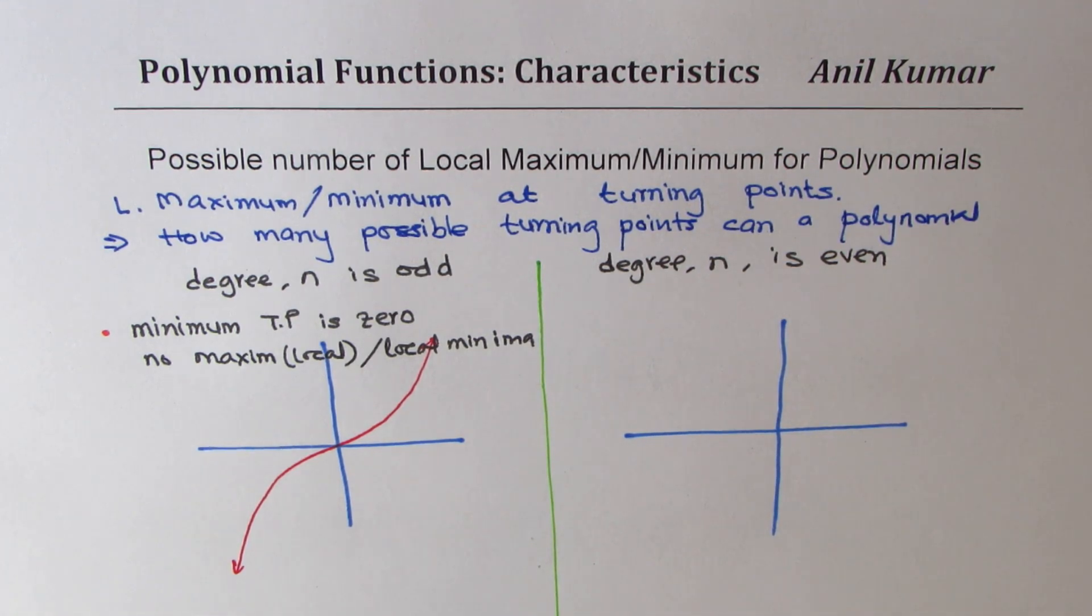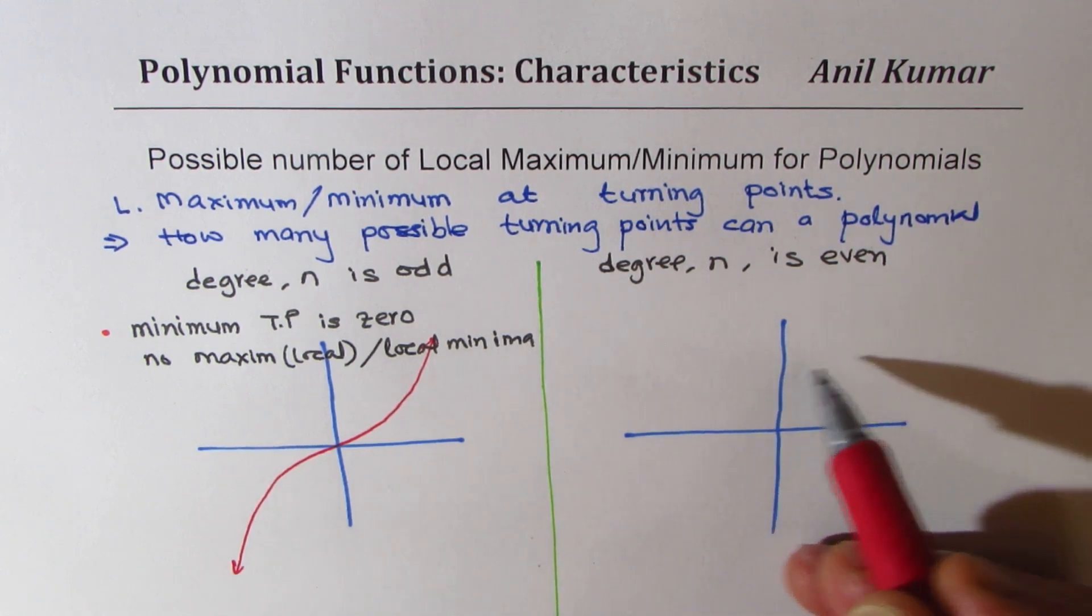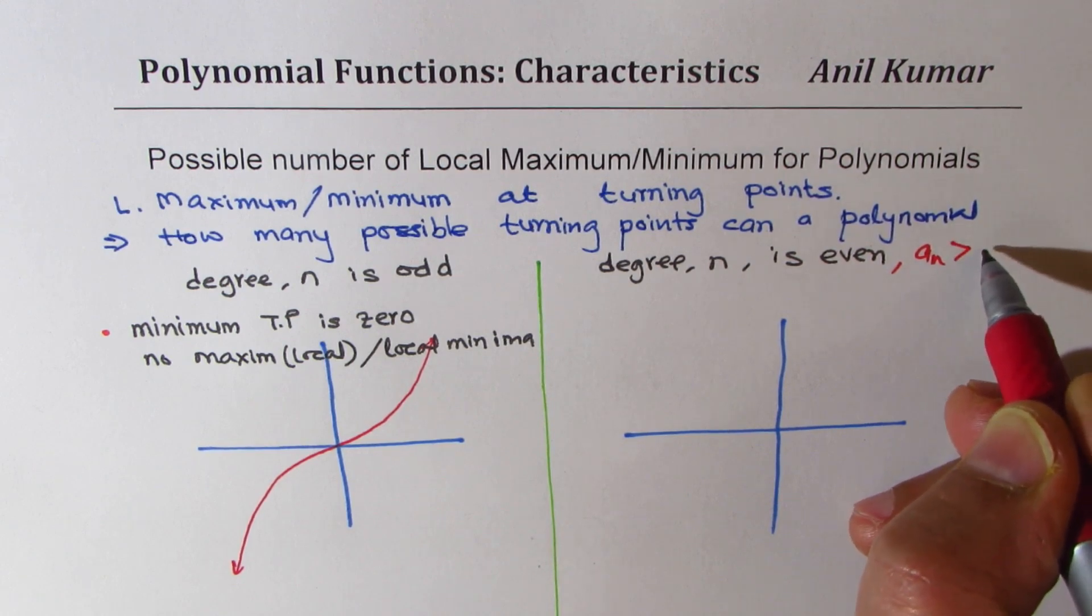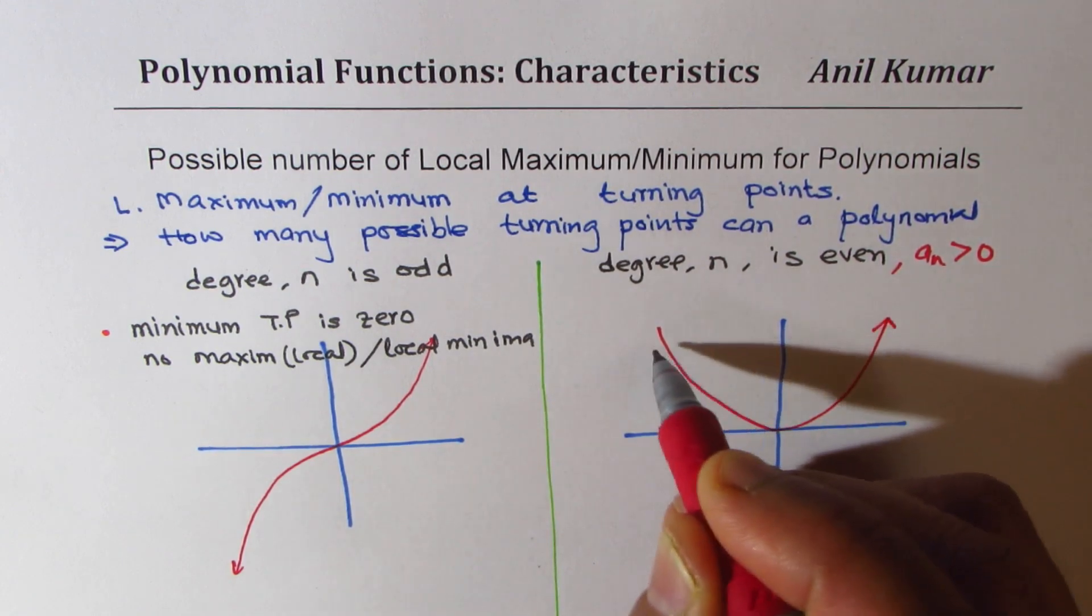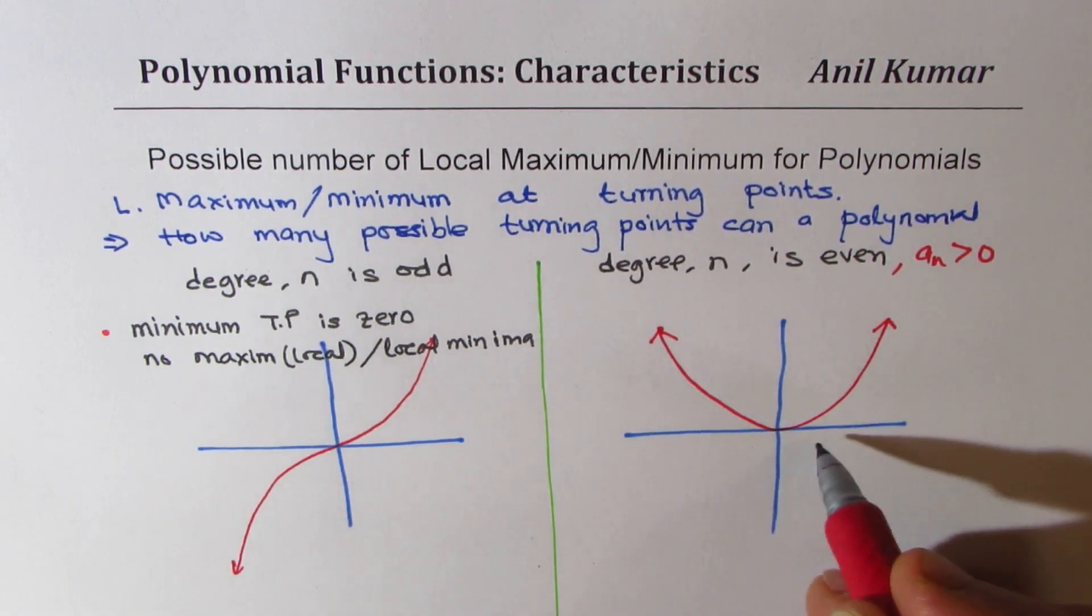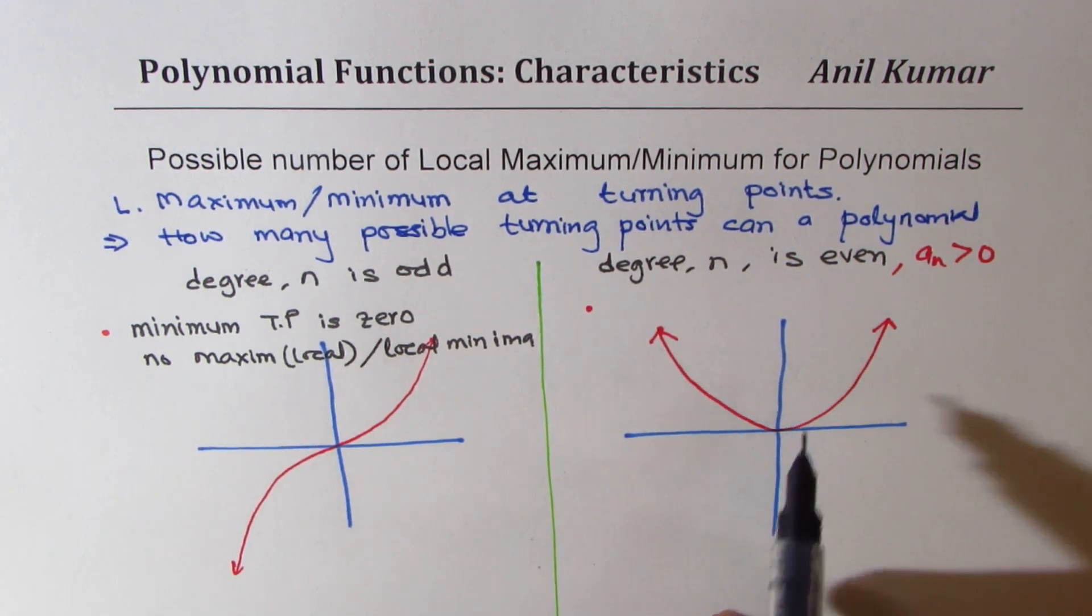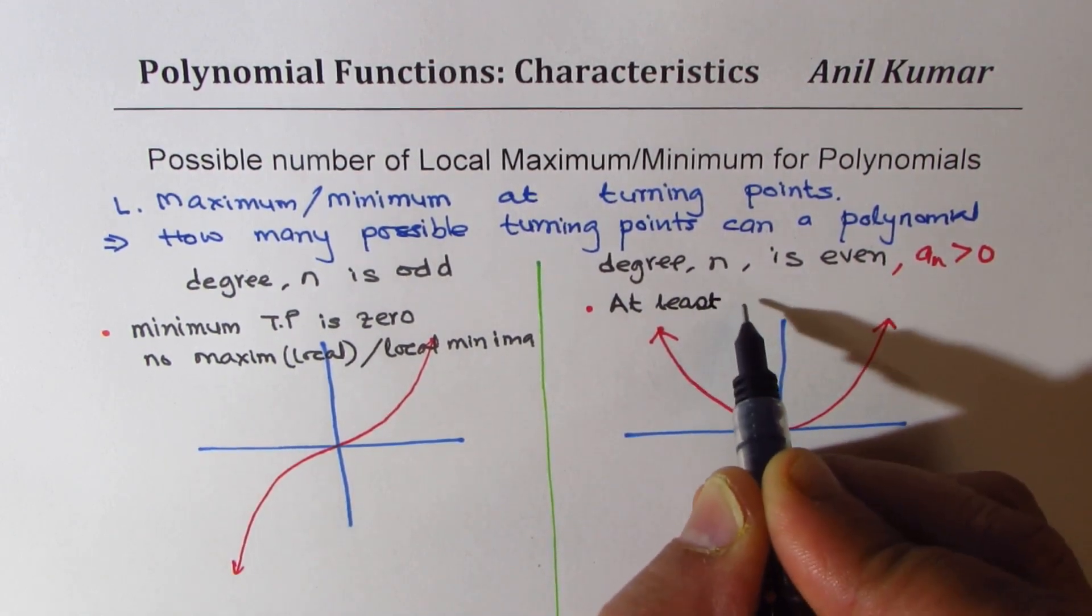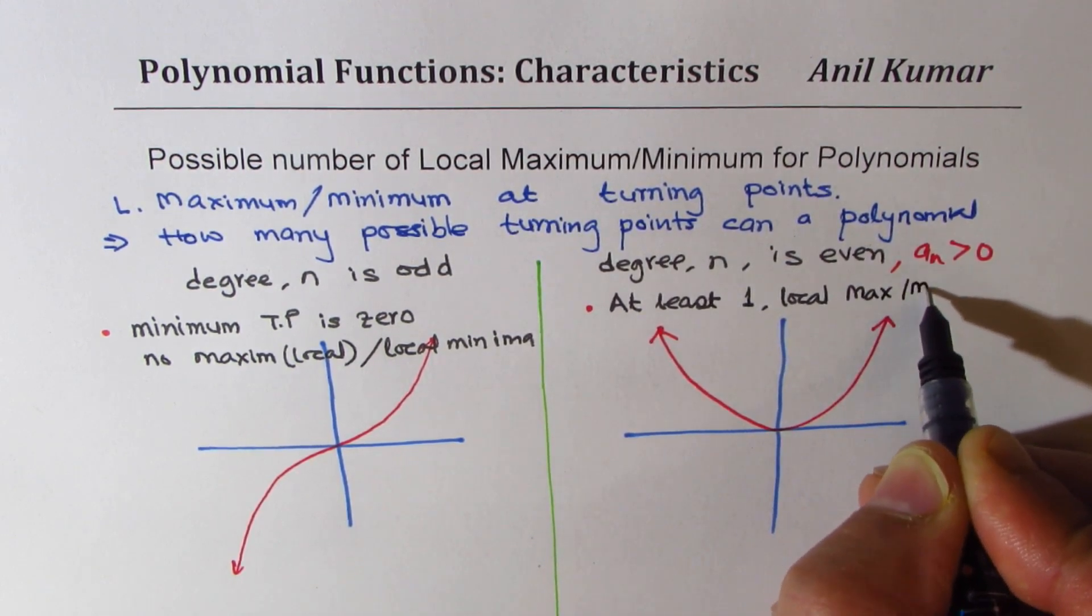On the other hand, for even degree polynomial, it has to go from adjacent quadrants. Either from 2 to 1 or from 3 to 4 depending on leading coefficient. So if I say leading coefficient is greater than 0, that means positive, then the graph could be kind of like this. So there is at least one local maximum or minimum. So we have at least one local maximum or minimum.